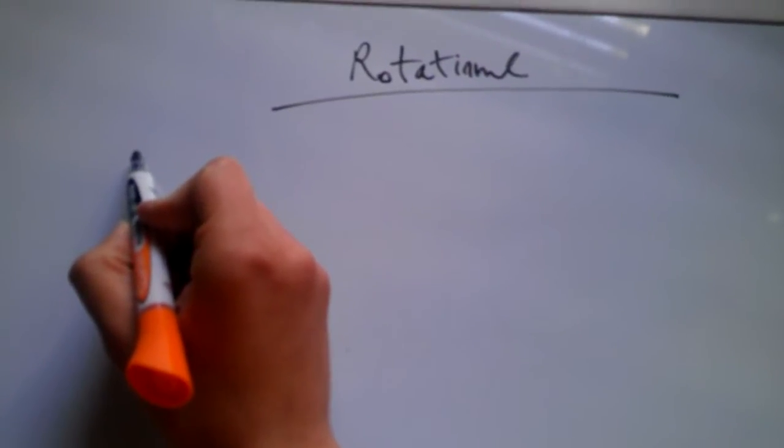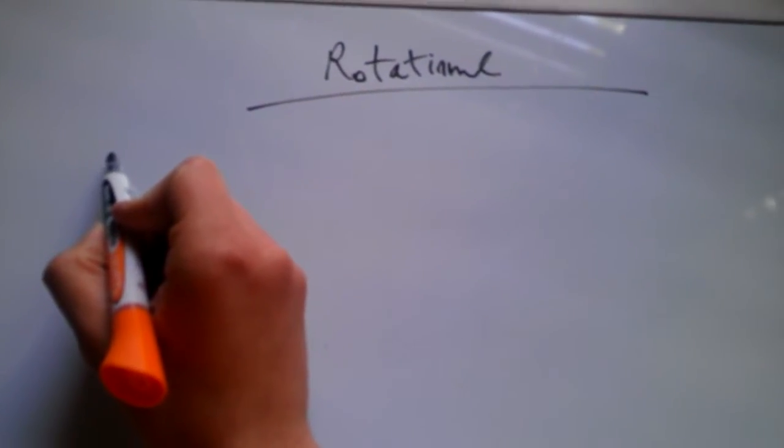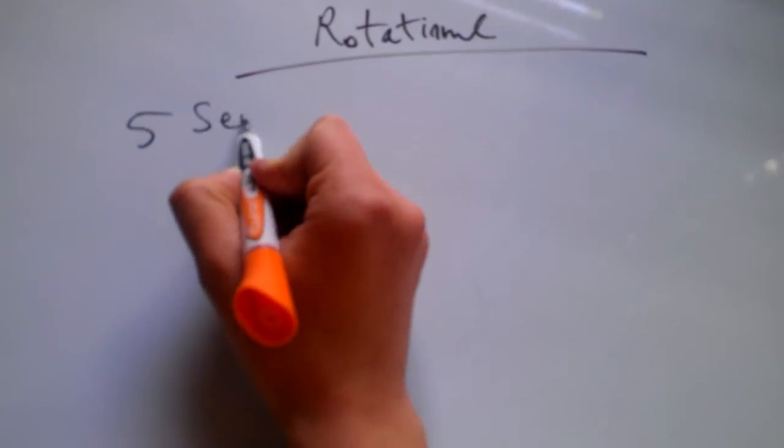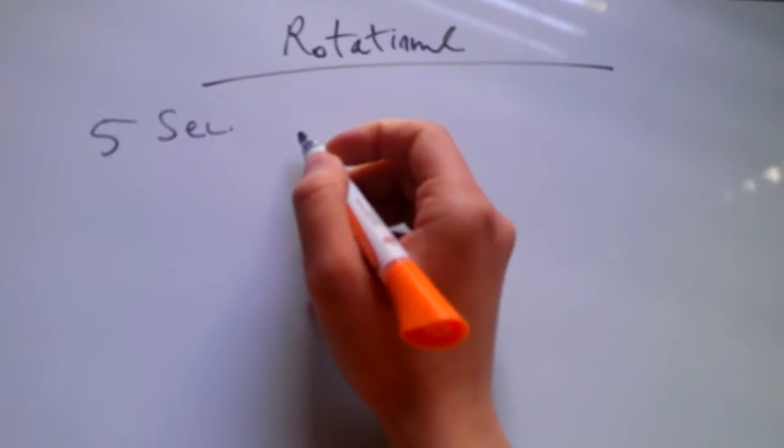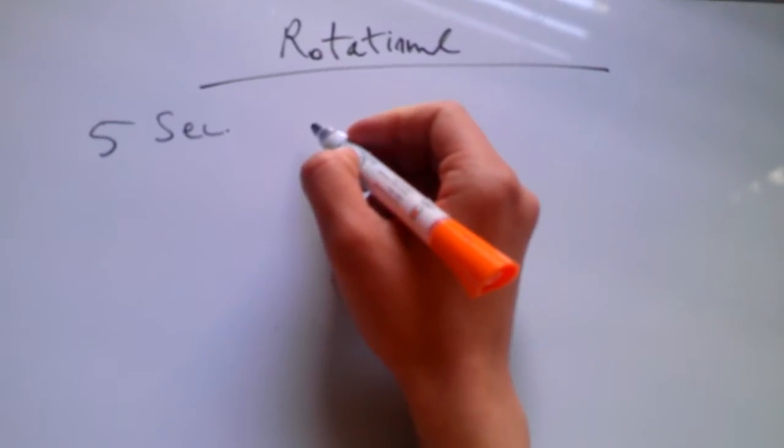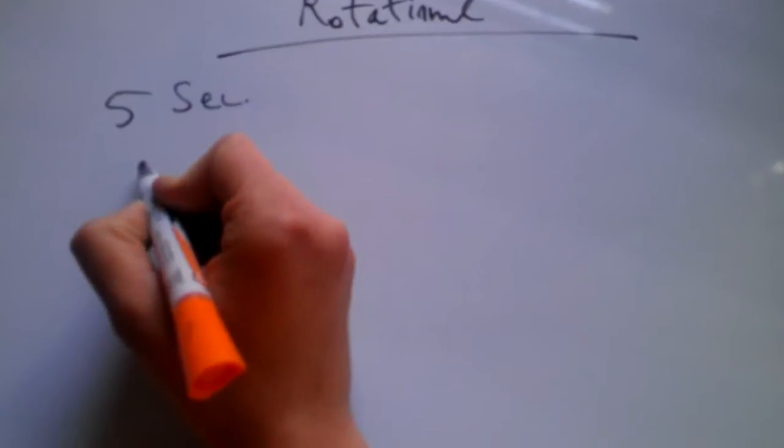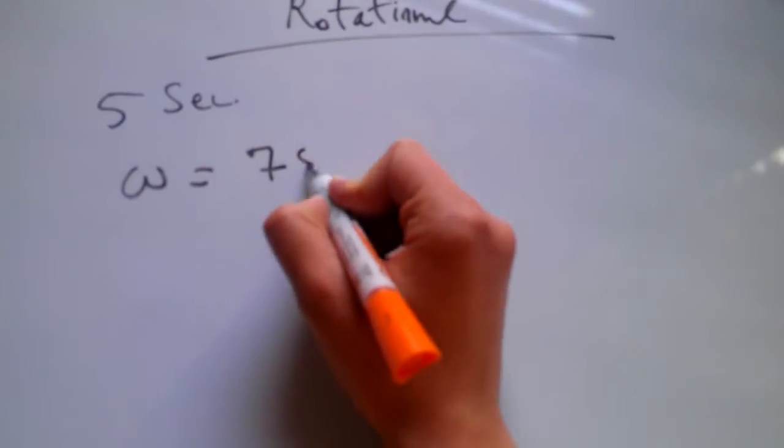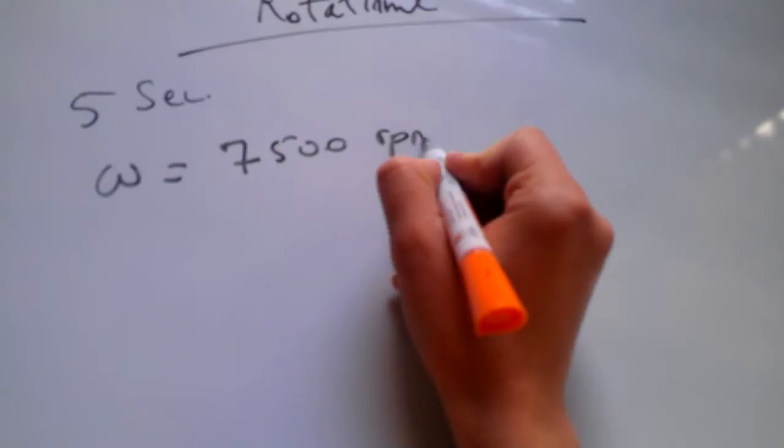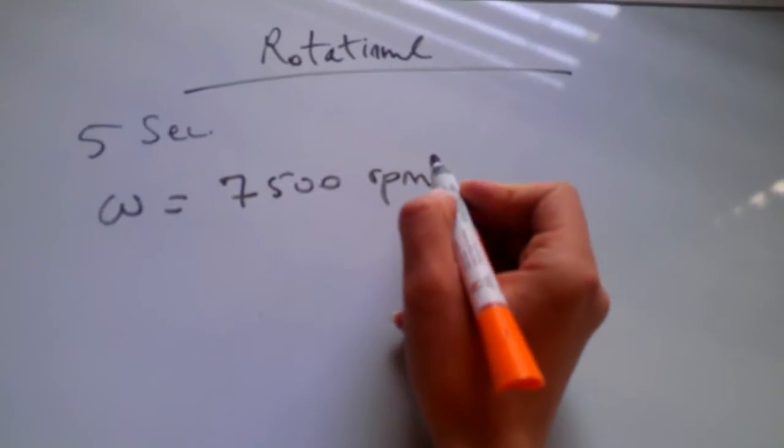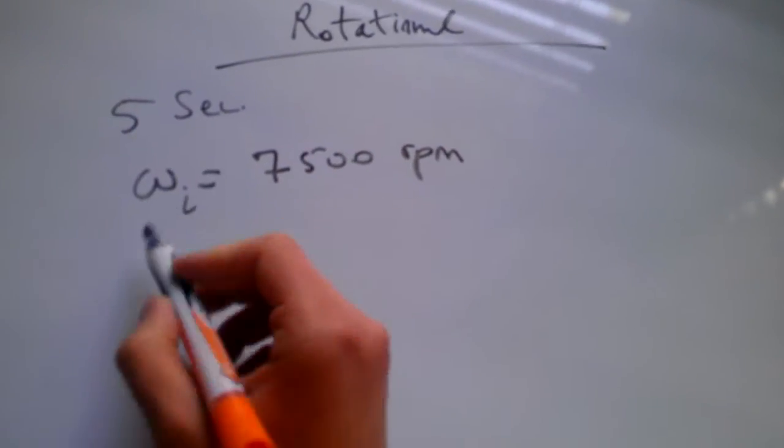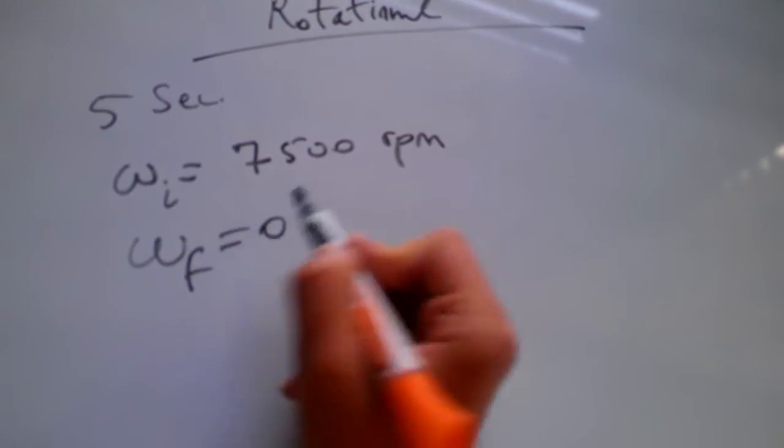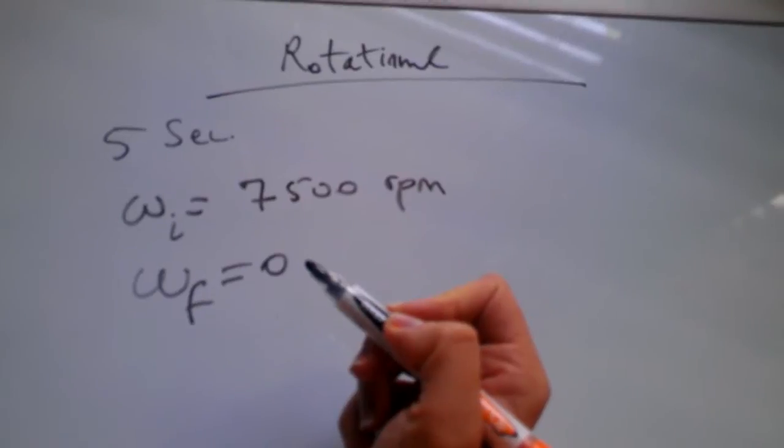So one of the very typical questions or problems are as follows. For example, if it takes five seconds for a DVD player to stop a DVD with a rotational speed of 7500 rpm, revolutions per minute, and so this is initial rotational speed and it's going to be stopped, so finally it's going to be zero.